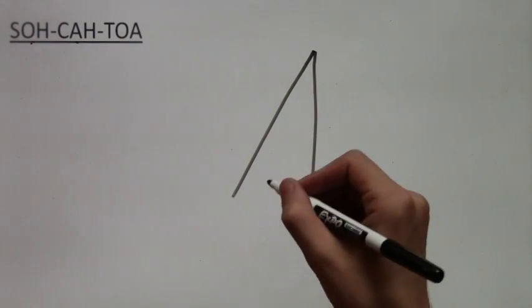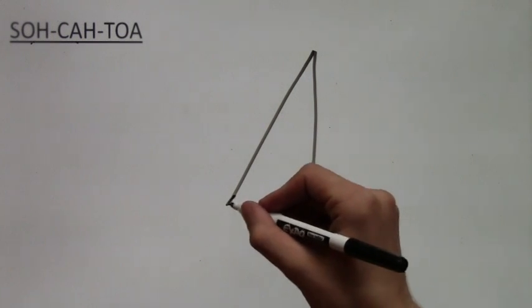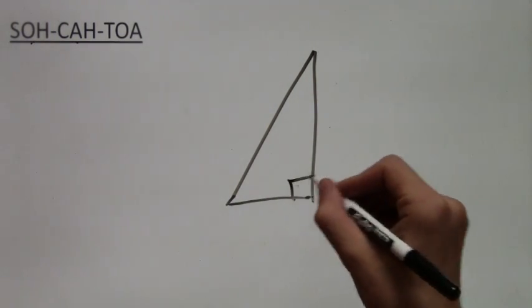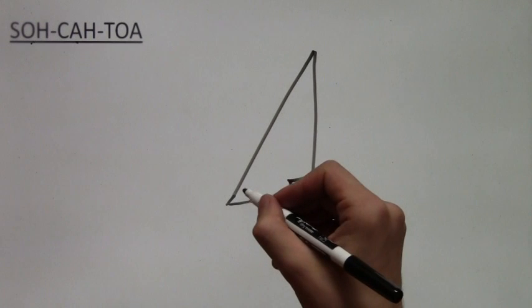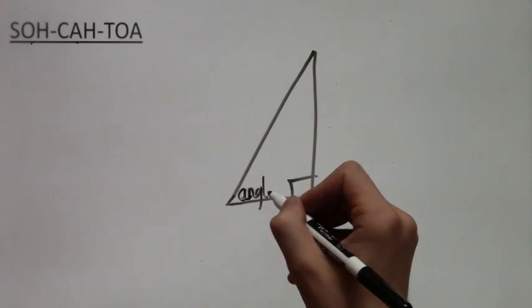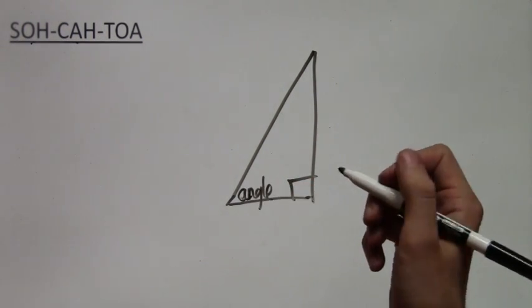So as before, SOH-CAH-TOA is about the relations of angles and sides in a right triangle. So in this case we're dealing with CAH, and the C stands for cosine.